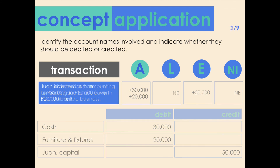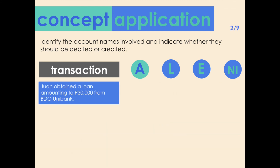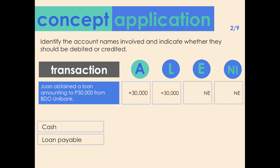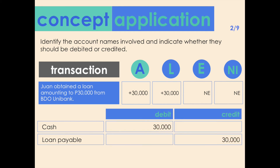Transaction two: Juan obtains a loan of 30,000 pesos from BDO Unibank. Accounts affected: cash and loans payable. The impact is an increase in both assets and liabilities for 30,000. Cash is an asset — the increase is beneficial — so it should be debited. Loans payable is a liability — the increase is less favorable — so it should be credited.